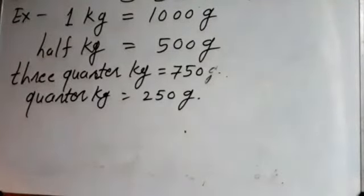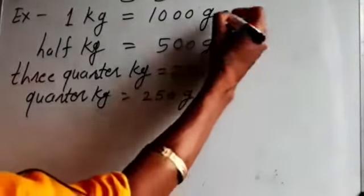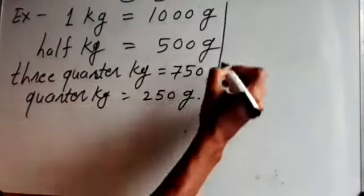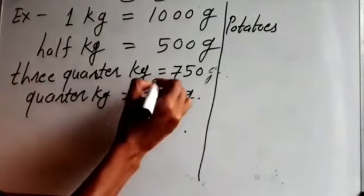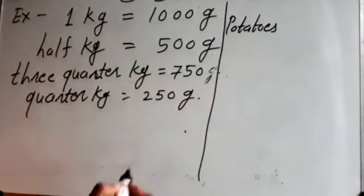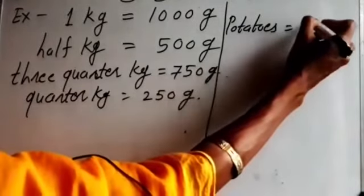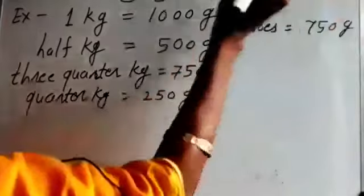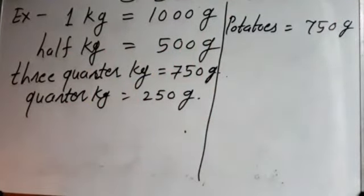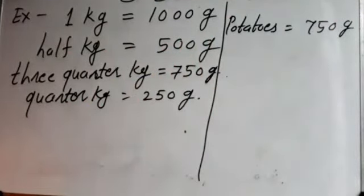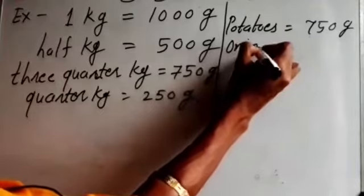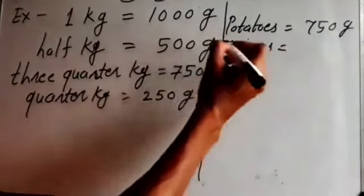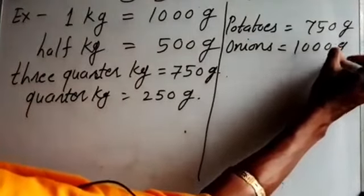So now it's easy for you. Reshma brought three-quarter kilo potatoes, so three-quarter kilogram means 750 gram. One kilo onions means one kilogram, which is 1000 gram.